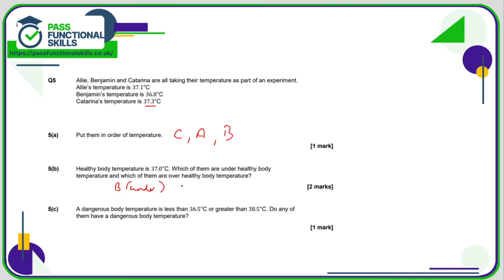A dangerous body temperature is less than 36.5 and greater than 38.5. Do any of them have a dangerous body temperature? Well, no one is less than 36.5. The lowest is Benjamin, he's 36.8, which is above 36.5, so he's okay. And no one is anywhere near 38.5. They're lower than 38, so they're all fine.